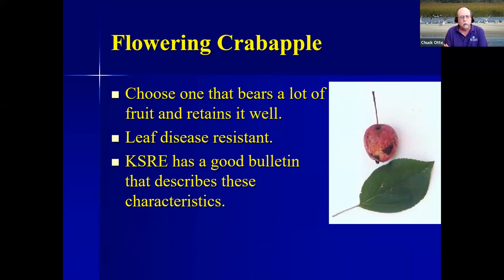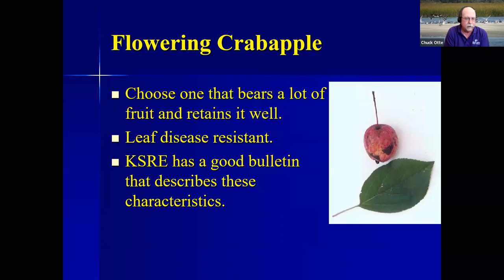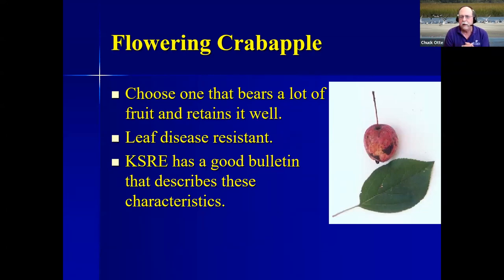Flowering crab apple — we need to get rid of all those ornamental pears and go back to flowering crabs. This KSRE bulletin on flowering crab apples is amazing: you can choose blossom color, fruit type, fruit retention, and leaf disease resistance. Get one that's cedar apple rust and apple scab resistant, bears a lot of fruit, and retains it well. Don't plant it where it'll overhang a driveway or sidewalk due to slip risk. We see very few problems with flowering crab apples volunteering, unlike ornamental pears.